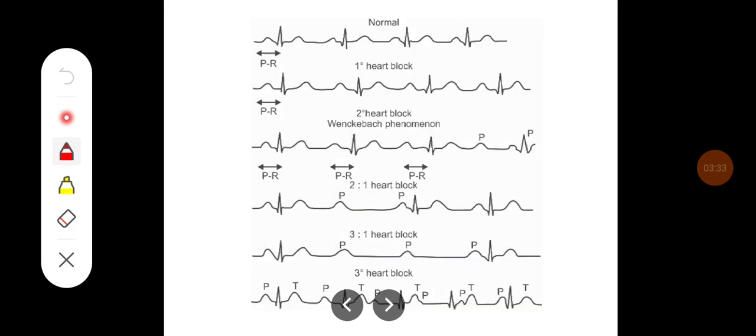This diagram shows the normal rhythm. This shows the first heart block where there is a prolonged PR interval, and here it is showing different types of second degree heart blocks, that is Wenckebach phenomena. Here PR is prolonged at subsequent beats and at one point the QRS complex disappears.